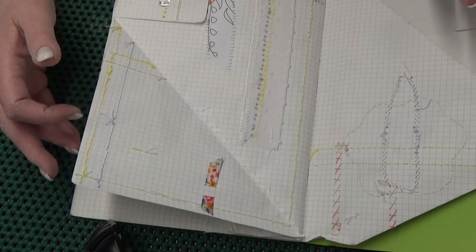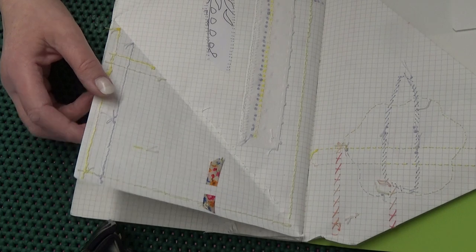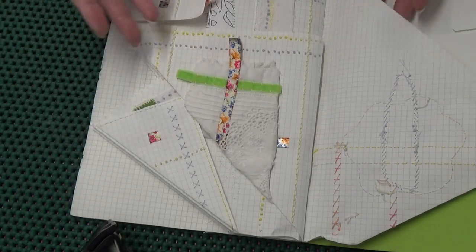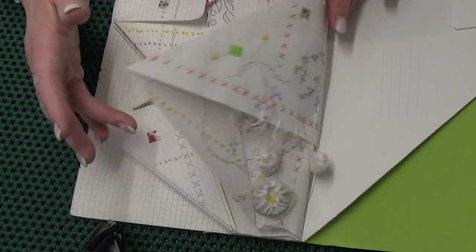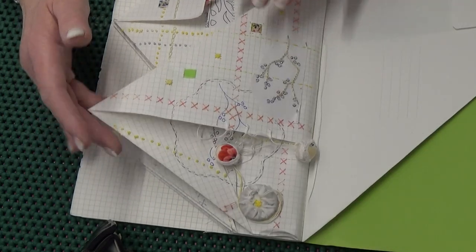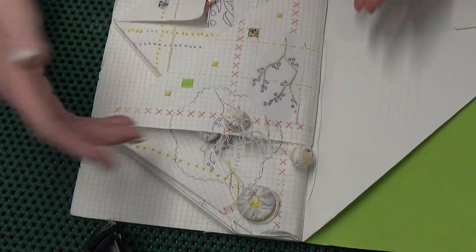But anything thicker might be difficult to fold as well. That's another thing. But they take stitch beautifully. Not a problem with stitching into them. And the other thing as well, so you need a straight line of French knots, say, or cross stitch. Well, then it's there, isn't it? Your lines are there.